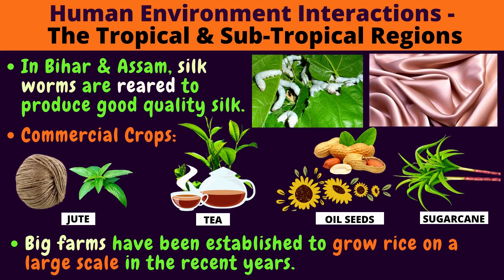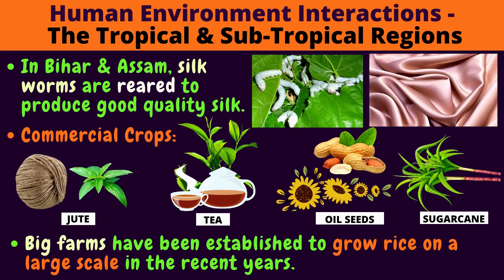Commercial crops are grown to sell. Jute — look at the jute leaf and the jute thread and rope. Tea — look at the tea leaves; chai! Tea leaves are used to make tea. Oil seeds — they grow seeds that produce oil like groundnuts and sunflower. Sugarcane. Big farms have been established to grow rice on a large scale in recent years.